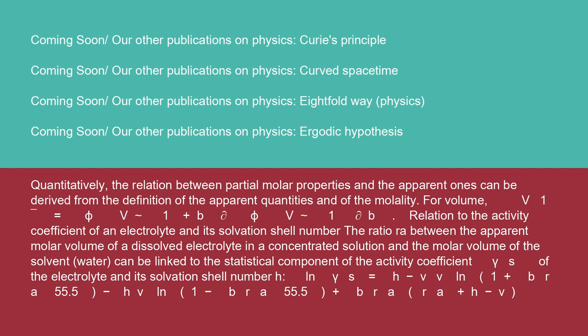Quantitatively, the relation between partial molar properties and the apparent ones can be derived from the definition of the apparent quantities and of the molality. Relation to the activity coefficient of an electrolyte and its solvation shell number: the ratio RA between the apparent molar volume of a dissolved electrolyte in a concentrated solution and the molar volume of the solvent (water)